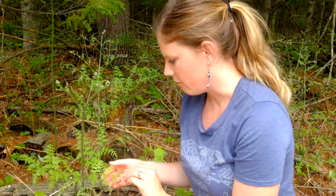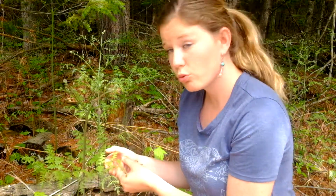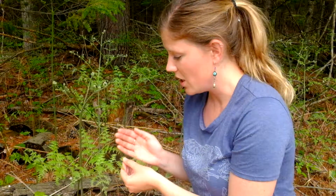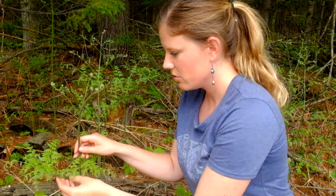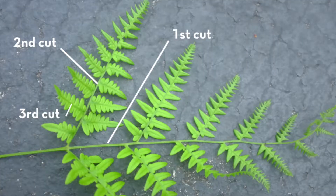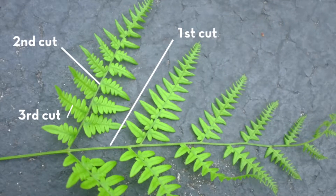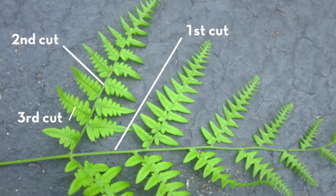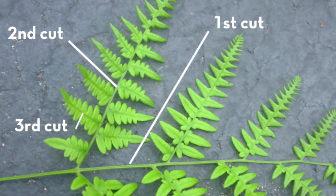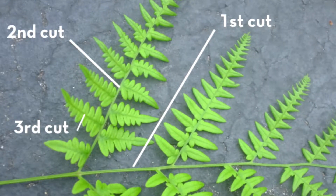Here we have a bracken fern, and this is cut three times — we call it being thrice divided, three times divided. So this is one frond right here, and that is cut once, twice, and then these tiny little leaflets are also divided — they're also compound. So cut once, twice, three times. That's a really easy way to start separating out groups of ferns that will go a long way towards identification.